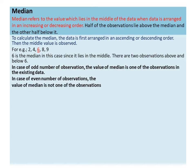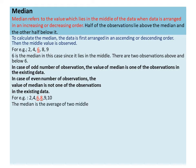In case of an even number of observations, the value of median is not one of the observations in the existing data. For example, 2, 4, 6, 8, 9, and 10 are six observations. If we find the middle observation, two observations come in the middle — that is, 6 and 8. In such a case, the median is the average of the two middle numbers: (6 + 8) ÷ 2 = 14 ÷ 2 = 7.